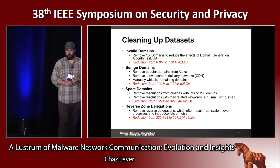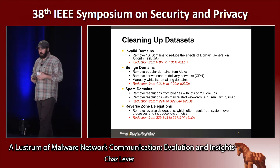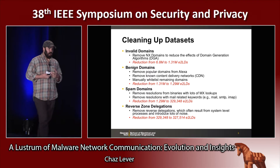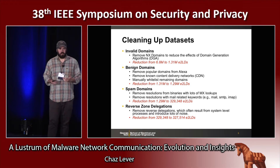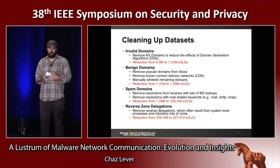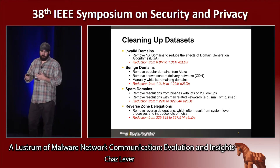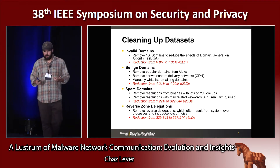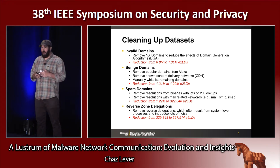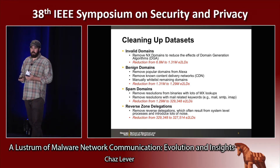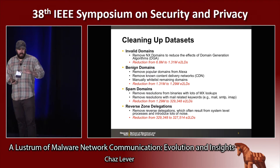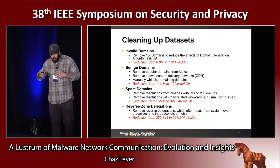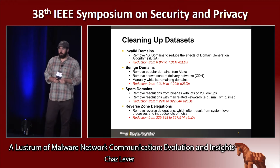The last thing we filtered out is an interesting artifact of the underlying host operating system that the malware runs on — reverse zone delegations. These aren't being explicitly queried by the malware, but are just an artifact of the underlying environment. Removing these gave us a slight reduction down to about 327,000. Ultimately, we went from about 7 million unique effective second-level domains queried by malware to a candidate set of about 327,000 that were most likely very strongly correlated with malware behavior.